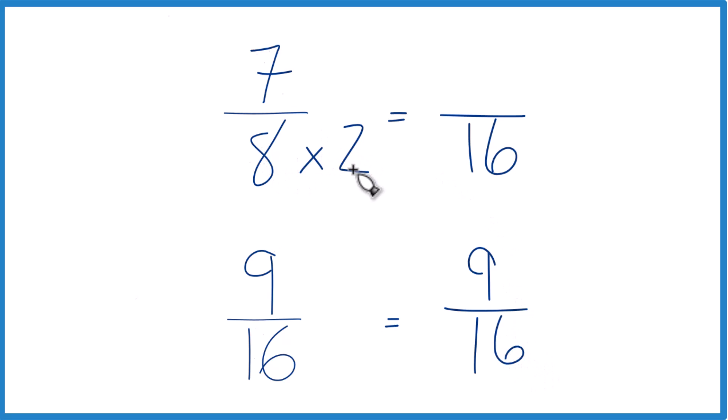But we can't just multiply 8 by 2 here in the denominator. We need to multiply the numerator by 2 as well. 2 over 2 is just 1. So we don't change the value, just the way it's represented. 7 times 2 is 14, and 14/16, that's an equivalent fraction to 7/8.